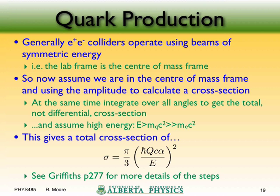After evaluating all the traces and multiplying through — exactly the same algebra as the electron-muon case but with different index pairings and the Q factor — we can put the matrix element into Fermi's golden rule, integrate the differential cross section over all solid angles in the center-of-mass frame. In the ultra-relativistic limit where the beam energy is much larger than the quark masses, the total cross section is proportional to Q-squared over the energy squared.